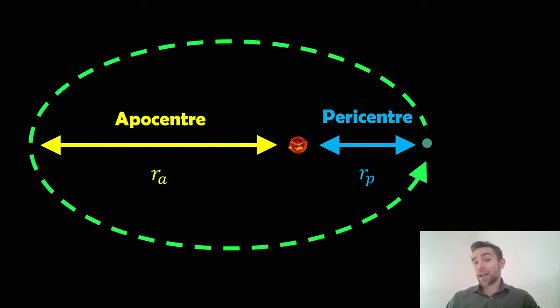With an elliptical orbit, we have the pericentre, which is the shortest distance between the two objects on its elliptical orbit. Then we have the apocentre, which is the opposite. That's the greatest distance on the orbit between the two objects.